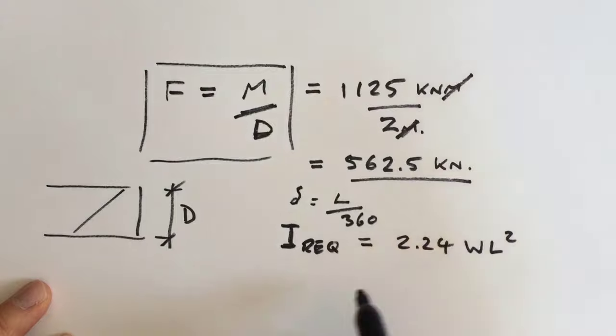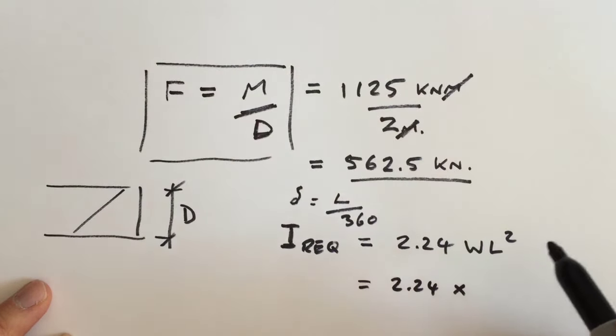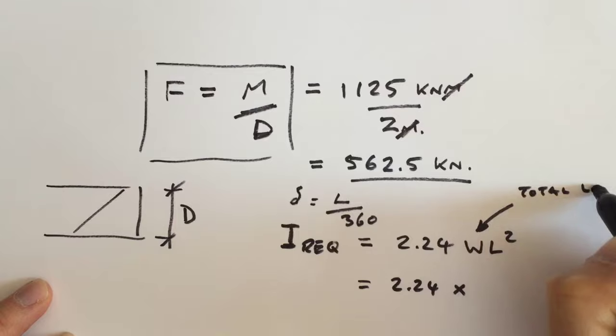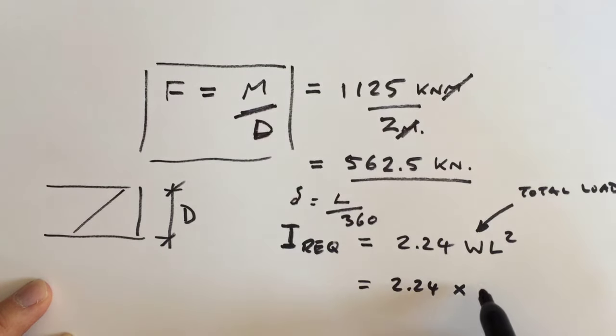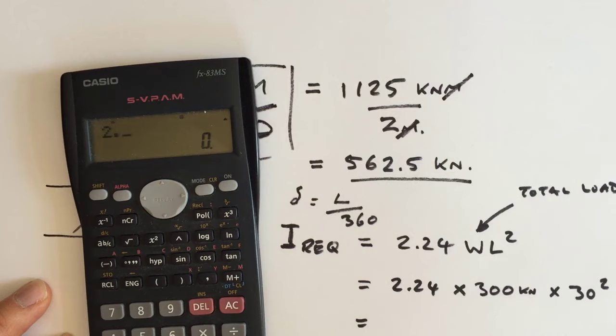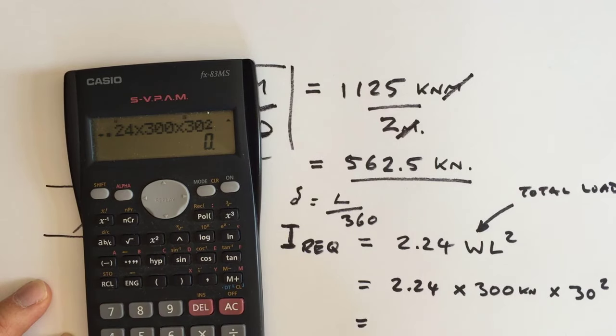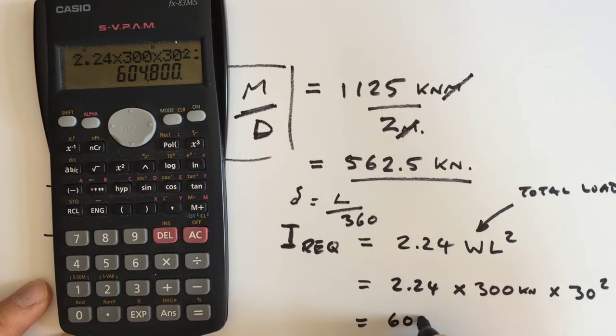So in our particular case, 2.24 times W, which is 10 kilonewtons per metre. So we're going to take 10 kilonewtons per metre times 30 is 300 kilonewtons, times 30 metres squared. 2.24 times 300 kilonewtons, that's the total load, times 30 squared equals 605,000. And this formula gives you the output in centimetres to the 4. So that's the fourth formula that you will need to remember.